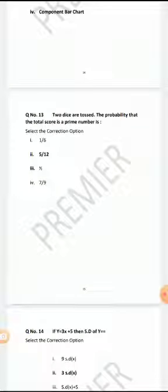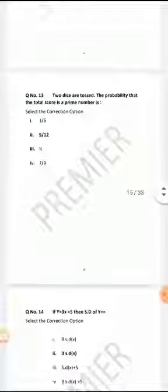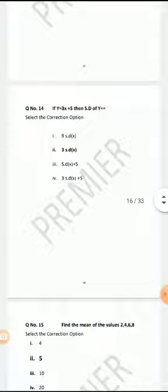Two dice are tossed. The probability that the total score is a prime number is - the correct answer is 5 over 12. If y equals 3x plus 5, then standard deviation of y - the correct answer is 3 times standard deviation of x.